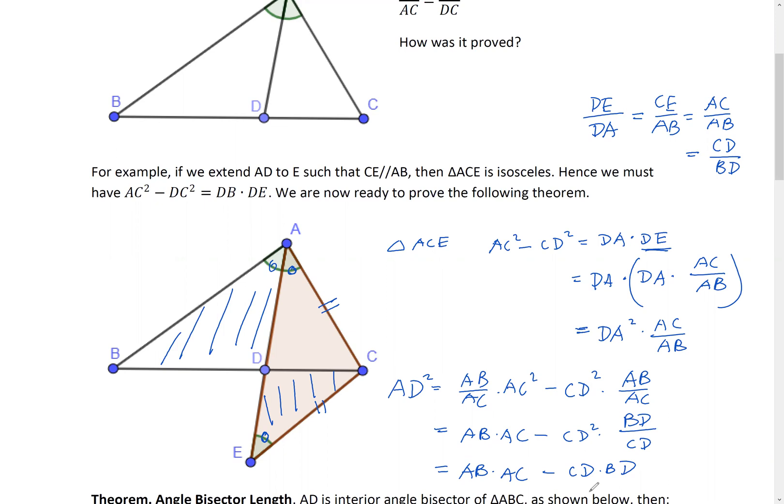And that's the main result I want to talk about today. Take a look. What is it saying right here? AD squared. This is the angle bisector. Its square equals AB times AC, the two legs product minus this times that, the two segments, the product of the two segments. It's a very nice result and very simple and relatively easy to remember.